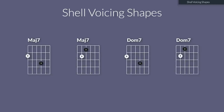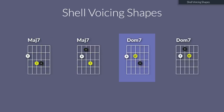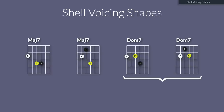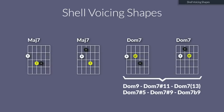Both have a major 3rd. The major 7 chord has a major 7 degree, while the dominant 7 chord has a minor 7 degree. The major 7 shape can be a substitute for many complex chords like major 9, major 7 sharp 11, major 13, major 7 sharp 5, and so on. The dominant 7 shape is a good substitution for dominant 9, dominant sharp 11, dominant 13, dominant 7 sharp 5, dominant 7 sharp 9, and dominant 7 flat 9 chords. The only thing we need to know is whether it's a major 7 or a dominant 7 chord to choose the right shape.